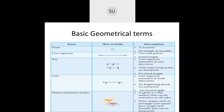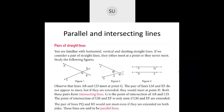A line is a line segment extended in both directions — it has no beginning point and no end point, and does not have a fixed length. Then we saw what are planes and plane shapes. A plane is a flat surface that can be extended on all sides, and plane shapes such as rectangles and squares have length and breadth that can be measured.